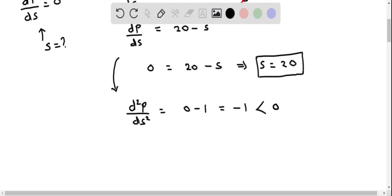This means, according to the second derivative test, whenever the second derivative is negative, it's a point of maxima. That means at S equal to 20, the profit is maximum.